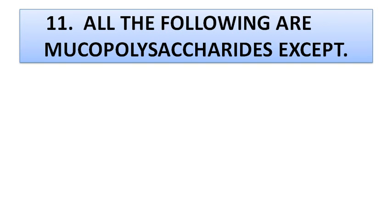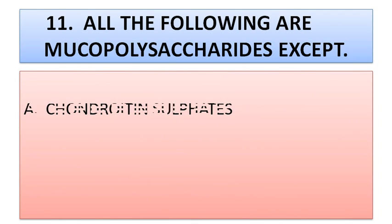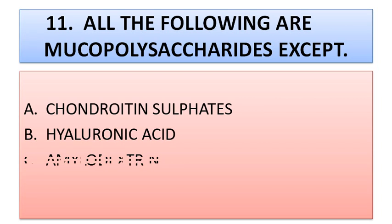Question number eleven: all of the following are mucopolysaccharides except — option A: chondroitin sulfates, option B: hyaluronic acid. [Options continue on screen.]